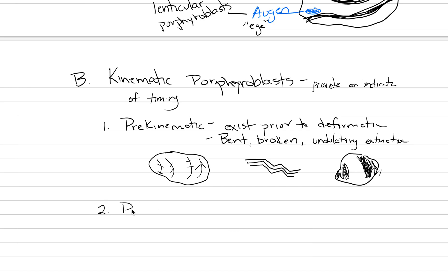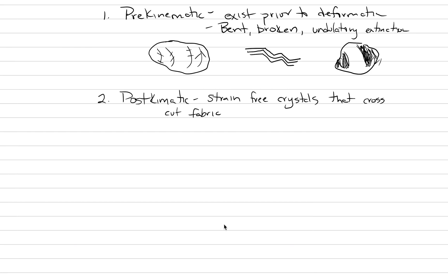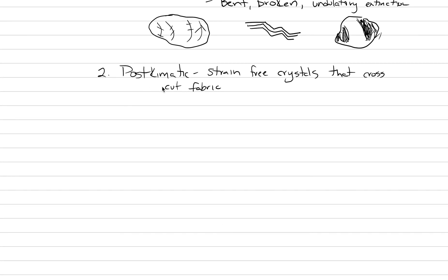The other end member is post-kinematic. These are undeformed crystals that occurred after the deformation. So let's define this as strain-free crystals that cross-cut fabric. They grew after all the main action. What would this look like? Well, they tend to be big, beautiful crystals that don't show any evidence for deformation, like these two examples. And then here's let's put in a metamorphic foliation fabric. And notice that the crystals don't align to that fabric at all.